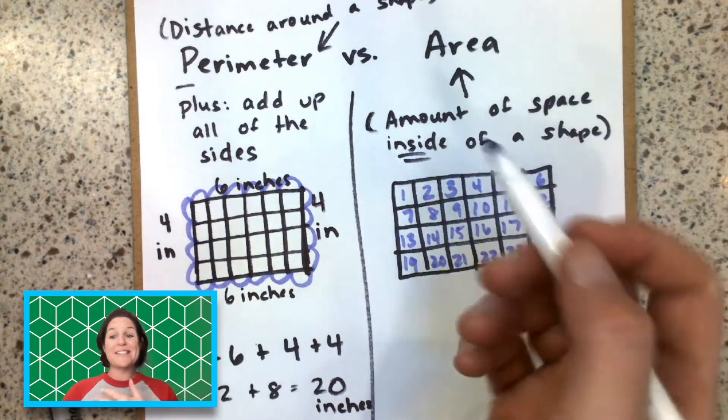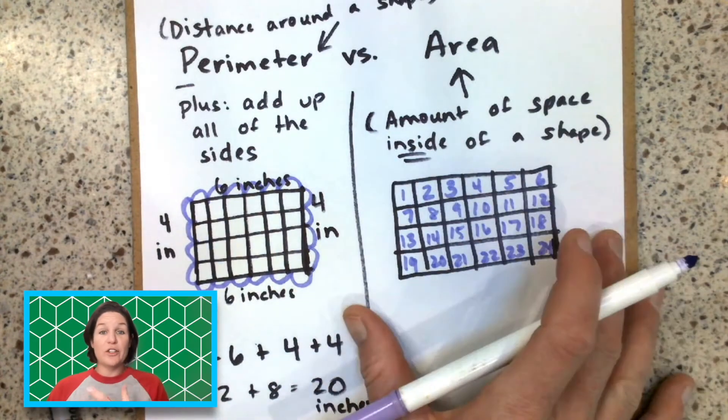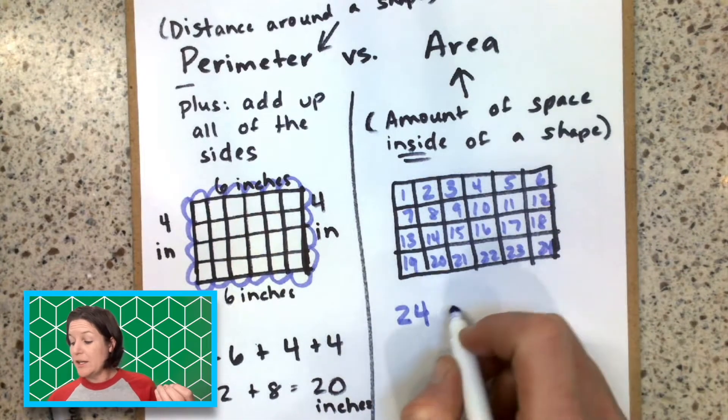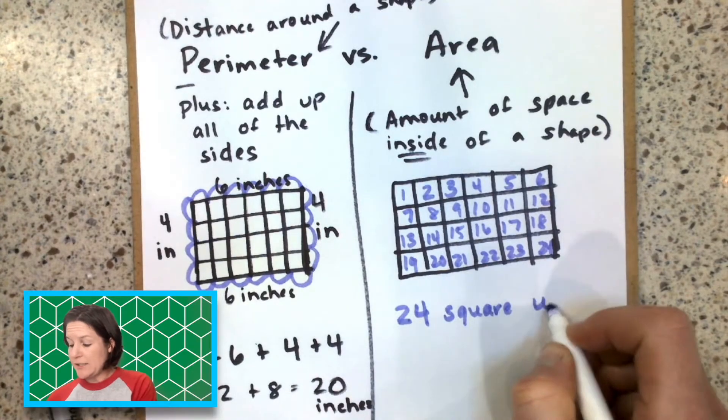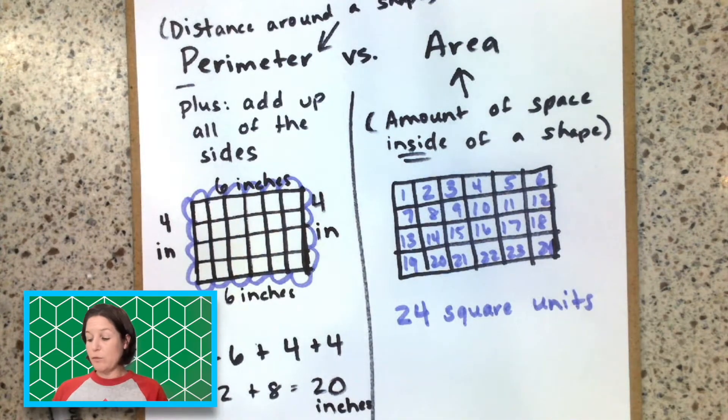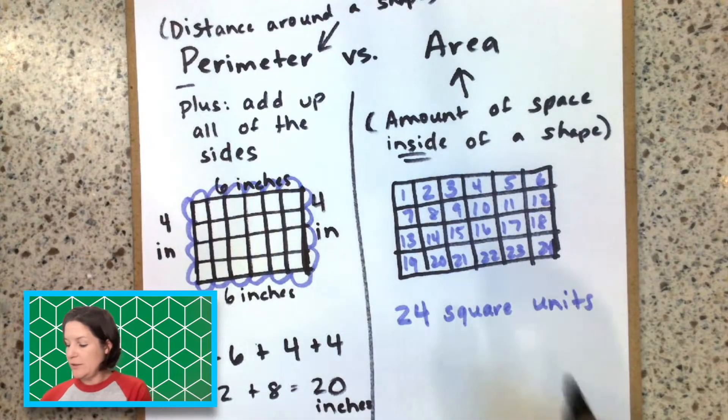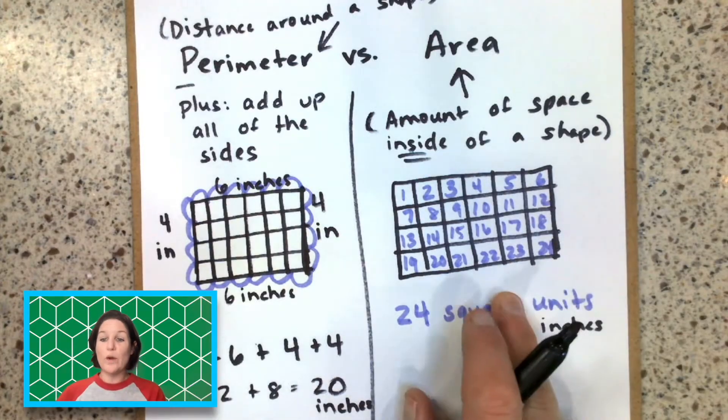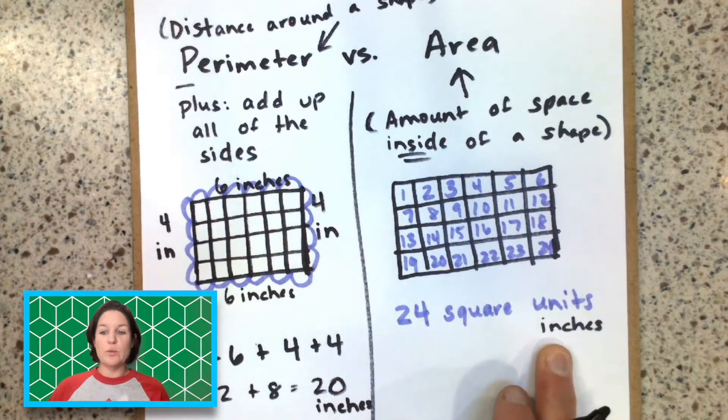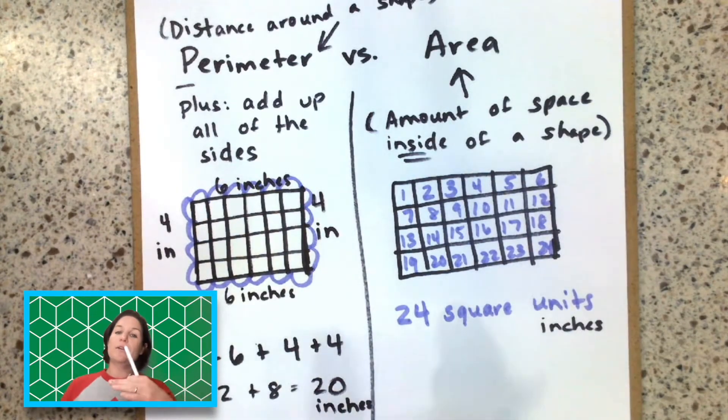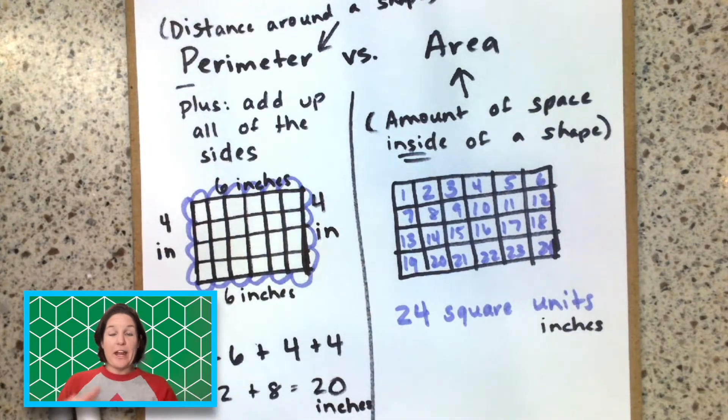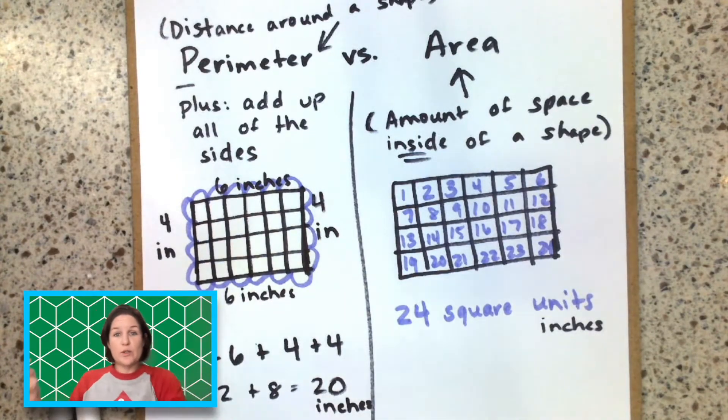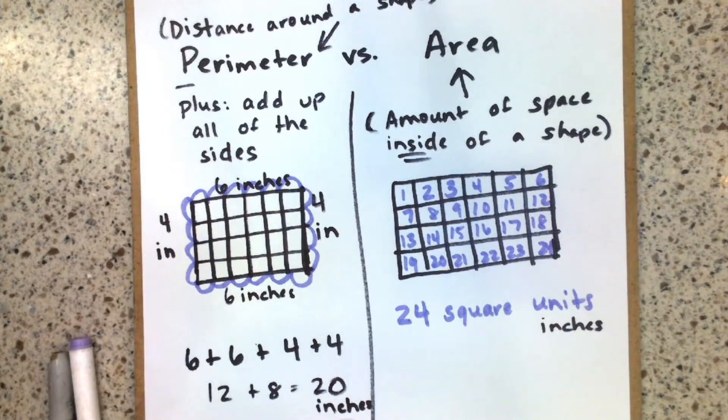That would be square units. Okay, 24 square units. Now if we label the units, we can call that inches. Like over here, I had inches. If I said each one of these was one inch, we would label it 24 square inches. But if the unit is not given, we just call it a unit. Remember with area, we need square units. Area needs square units. Perimeter, it's just the units.